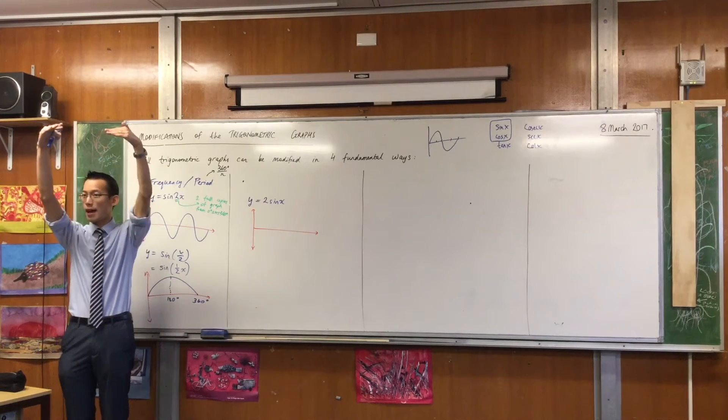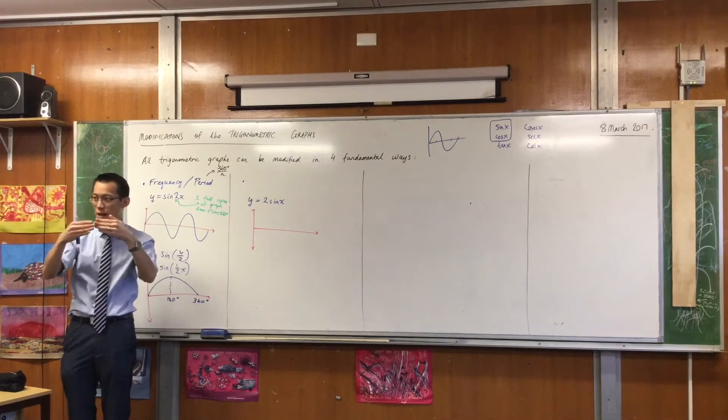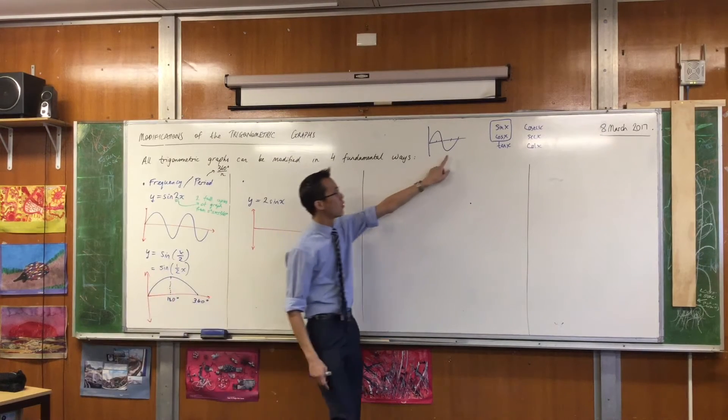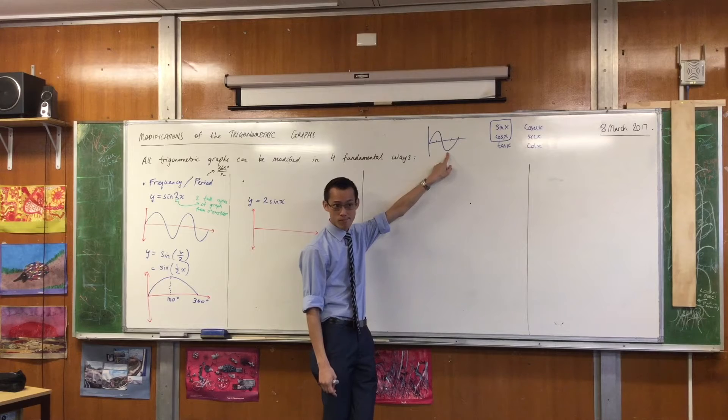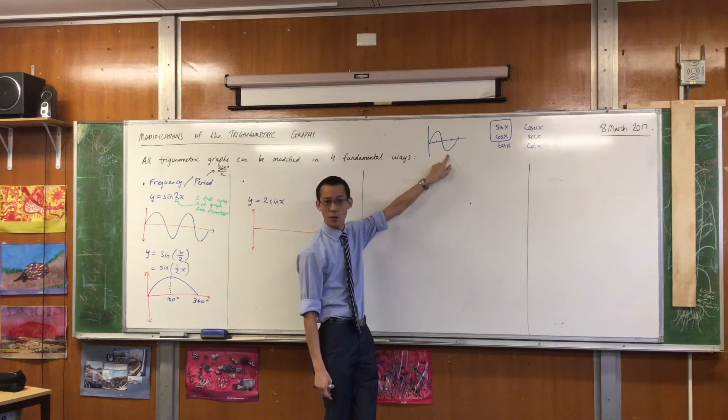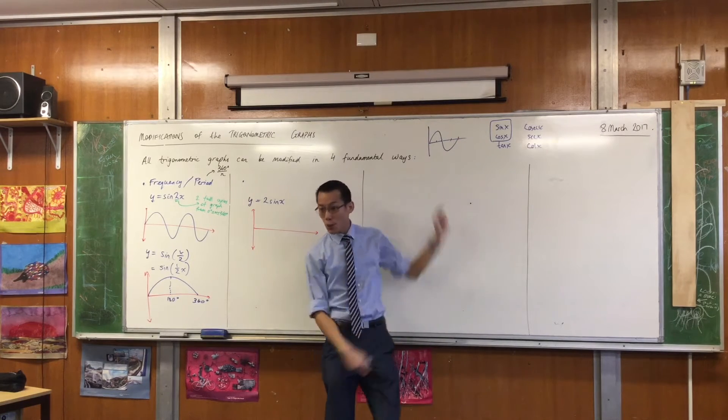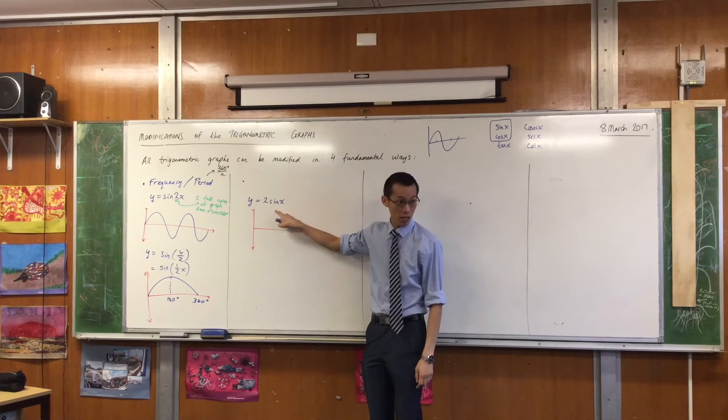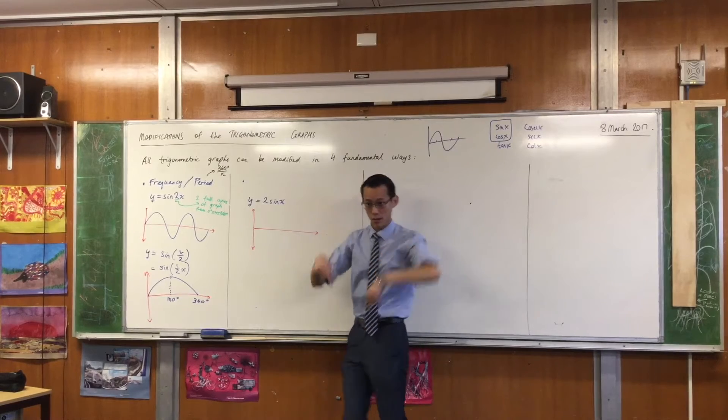But I can go twice as high, and I can also go twice as low, because once I get to here, what angle is that by the way? The angle to get me to this turning point is 270. If you go 2 sine 270, it's going to go 2 times negative 1, which is negative 2.